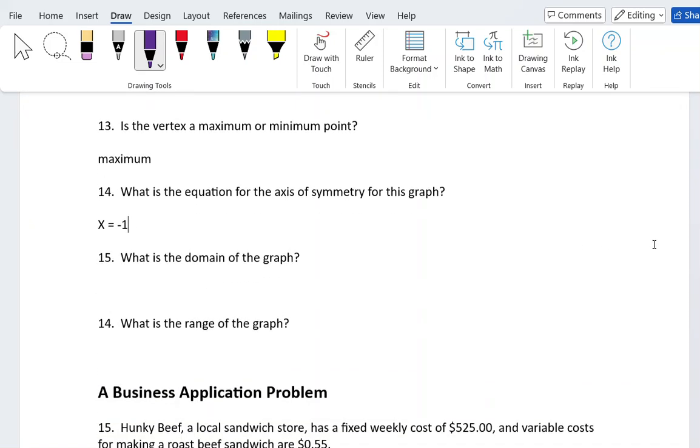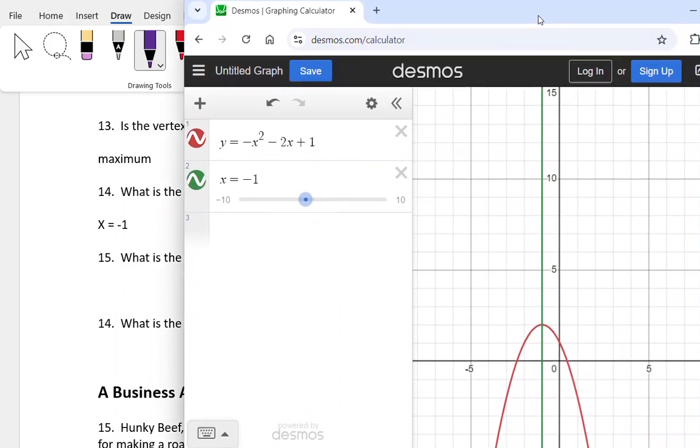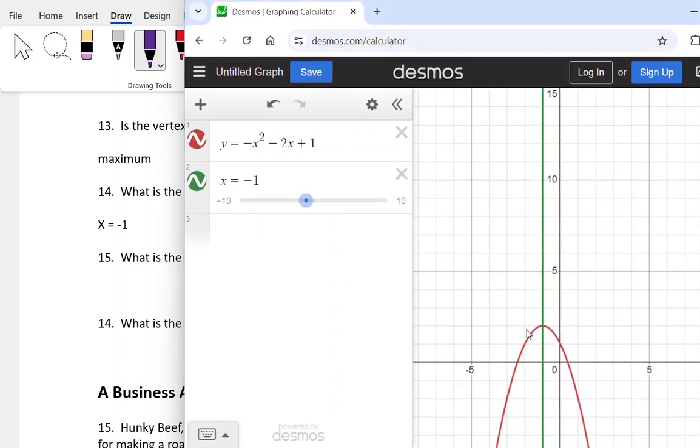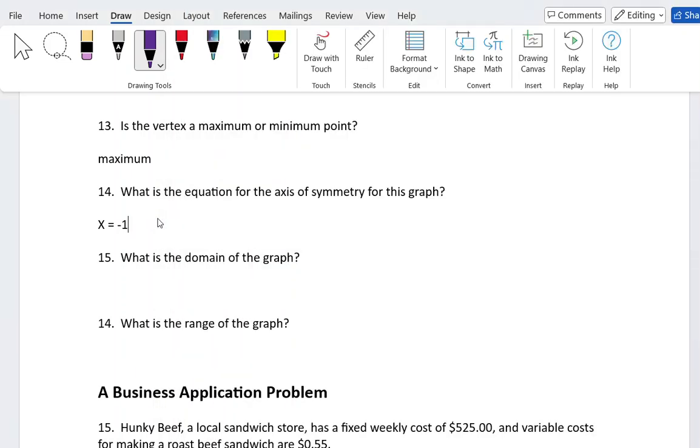Question 15: what is the domain of the graph? Domain is looking at possible x values for the graph. There are all possible x values for this graph—the parabola continues even off the screen. Any possible number for x I can plug into this equation and get a value for y. I could plug in positives, negatives, decimals, fractions—anything works. So my domain is going to be negative infinity to positive infinity. In MyLab, they will have the infinity symbols toward the bottom of the screen for you to select so you can put those into your answers.